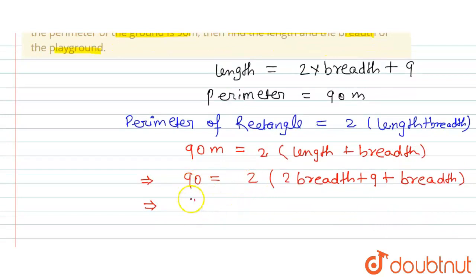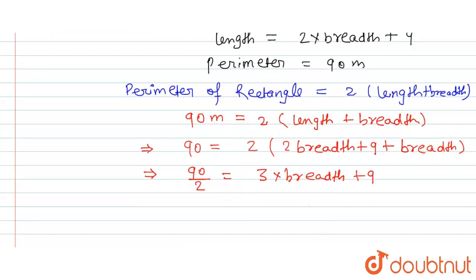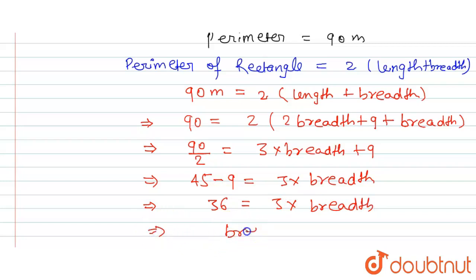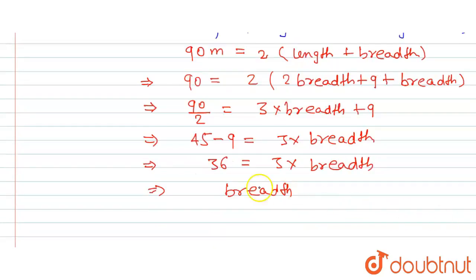Dividing both sides by 2 gives 45. On the right side, 2 times breadth and 1 breadth gives 3 times breadth, plus 9. So 3b + 9 = 45. Moving 9 to the left gives 3b = 36. Dividing by 3, breadth equals 36 divided by 3, which is 12. So breadth is 12 meters.